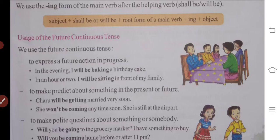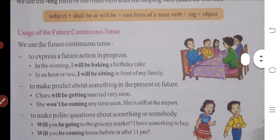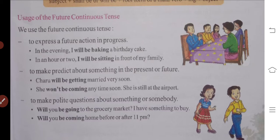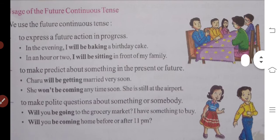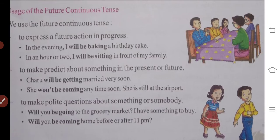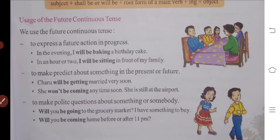In an hour or two, he will sit with his family members. In the first sentence, he told us he will make a cake in the evening. In the second sentence, he told us that after two hours he will sit with his family members — these are future actions in progress.